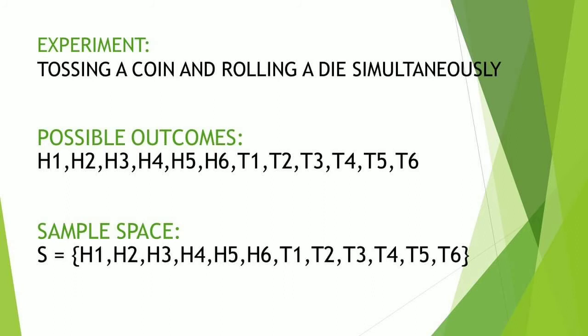So let's have this experiment: tossing a coin and rolling a die simultaneously. The possible outcomes are H1, H2, H3, H4, H5, H6, T1, T2, T3, T4, T5, T6.